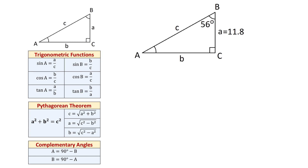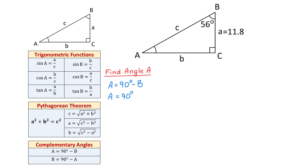I will start by finding angle A. We write the formula A equals 90 degrees minus angle B, then replace to get 90 degrees minus 56 degrees. Therefore, angle A equals 34 degrees.